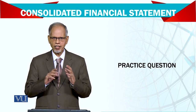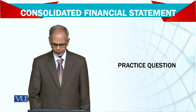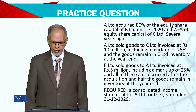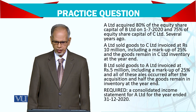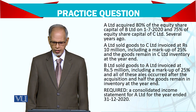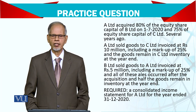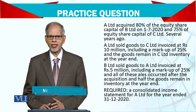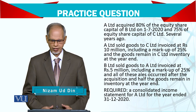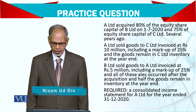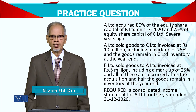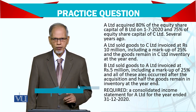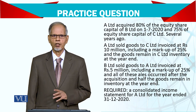Let's see the group accounts. A Limited acquired 80% of the equity share capital of B Limited. So here it's clear that A is the holding company of B, having an 80% share. Another important thing in this question is that it was acquired on 1st July, not on 1st January, but during the year.